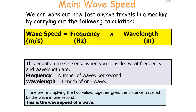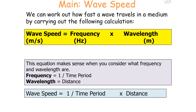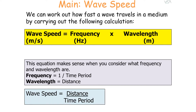If you consider our equations, we can say frequency is one over the time period and wavelength is distance. Therefore wave speed is one over time period times by distance, or distance over time. So speed is equal to distance over time, or frequency times by wavelength.